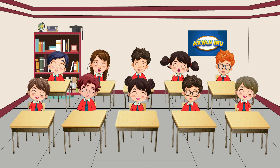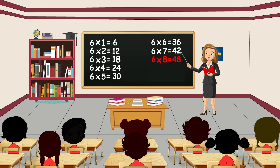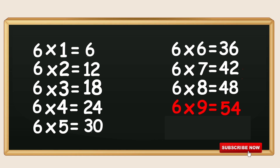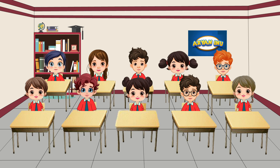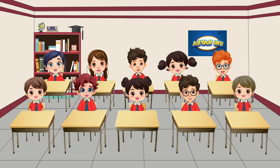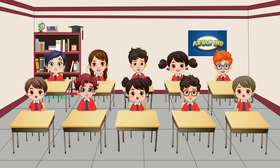Six sevens are forty-two. Six eights are forty-eight. Six nines are fifty-four. Six tens are sixty.